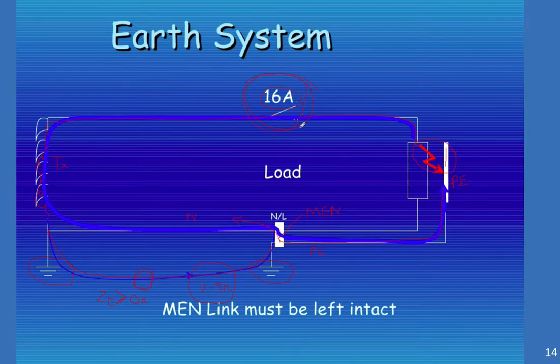The difficulty is, if we rely on this body of earth to do the tripping of the circuit breaker, because the resistance in here could be as high as two, maybe to five ohms, we will not get sufficient trip current to flow to make our protective device do its job. And that's the whole problem. So the MEN link must be left intact.